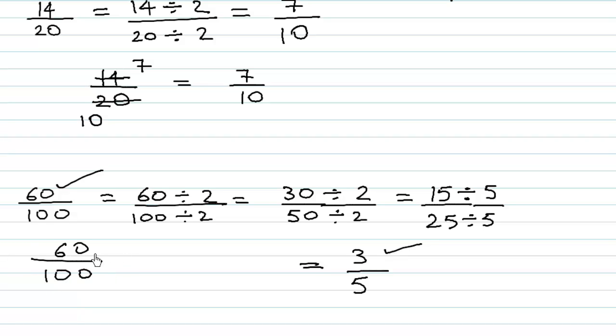Another way: 60 over 100, we can divide both by 10. 6 times 10 is 60, and 10 times 10 is 100, then divide by 2: 2 times 3 is 6, and 2 times 5 is 10. A shorter way is cancelling the zeros - this is dividing both numbers by 10, then dividing by 2.